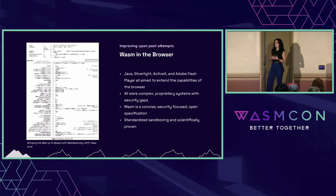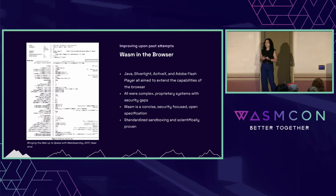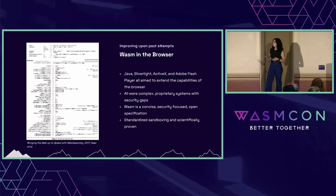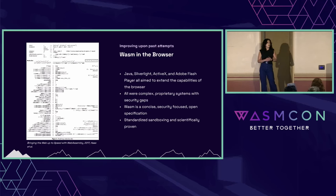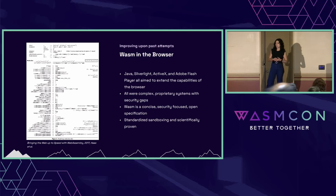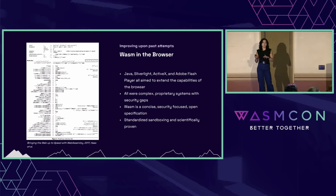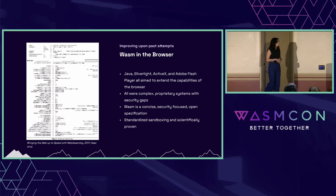WebAssembly learned from some of the shortcomings of those technologies and extended beyond them. All these technologies ended up not being able to reach the summit because they did not quite have the security they needed — they ended up becoming vectors for malware attacks. With this in mind, the authors of the WebAssembly specification made it security-specific; they focused on security when designing that specification. They also, instead of being a proprietary system, made it an open standard, and in order to encourage more people to be involved with it, they made it concise.